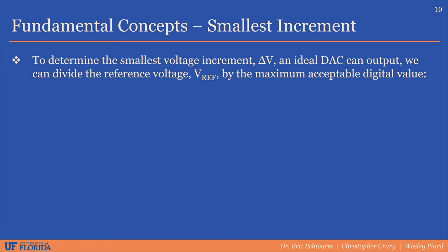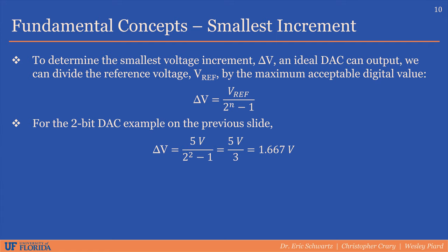It's often helpful to know the smallest possible voltage increment a DAC can output. This is often denoted delta V. For an ideal DAC, this is equal to the reference voltage divided by the maximum digital value. As illustrated on the previous slide, for the 2-bit ideal DAC, the smallest voltage increment is 1.667 volts.